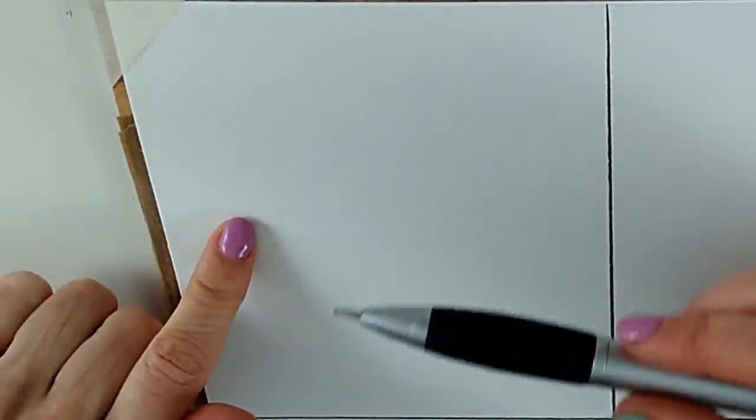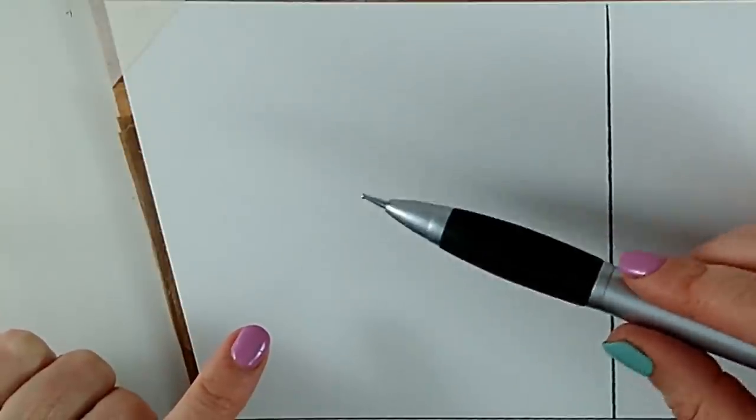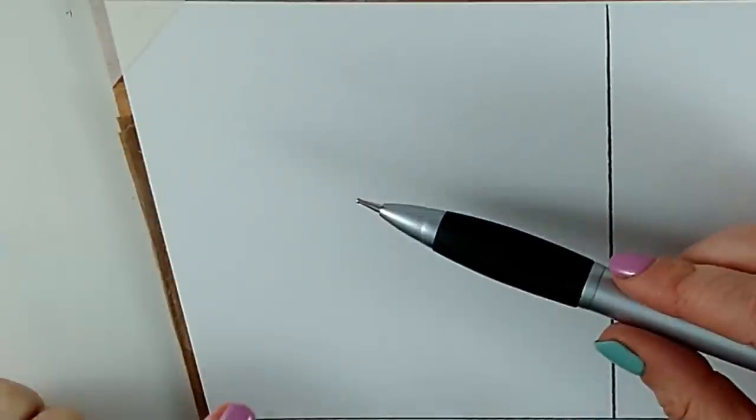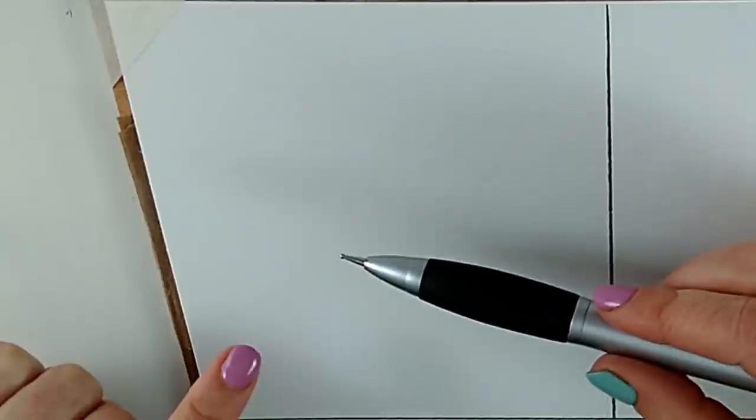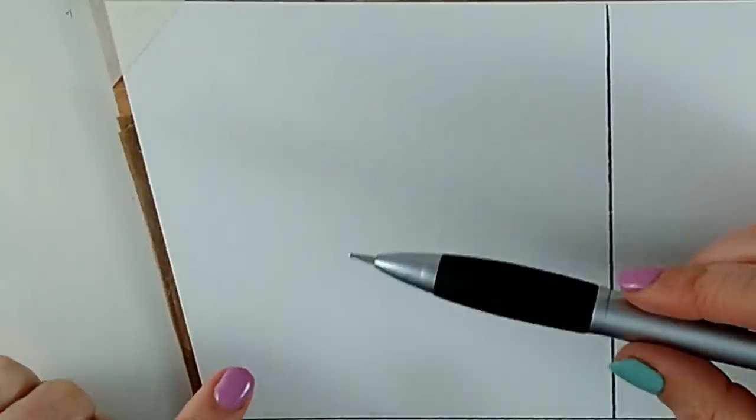So what actually happens when you make a dent in your paper? Well, it all depends on the medium you're using. A dry media may skip across the top of the dent, leaving a white mark. A wet media may sometimes go into the dent, leaving a dark mark. So let's go through the mediums. We're going to start with this graphite pencil.